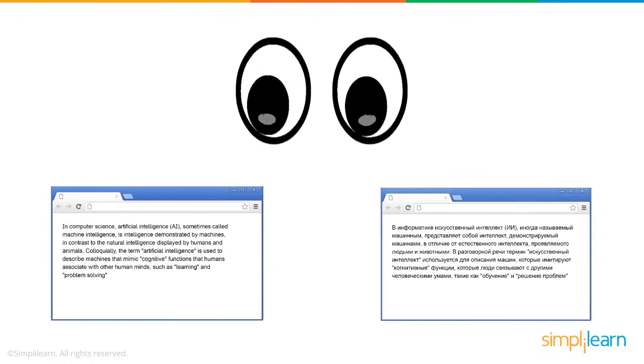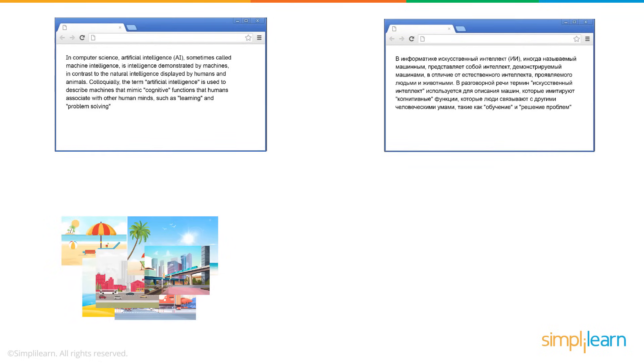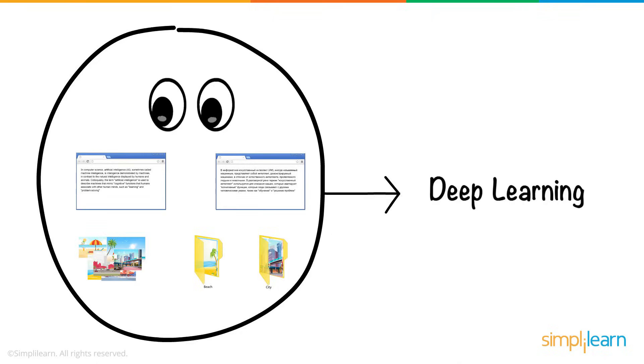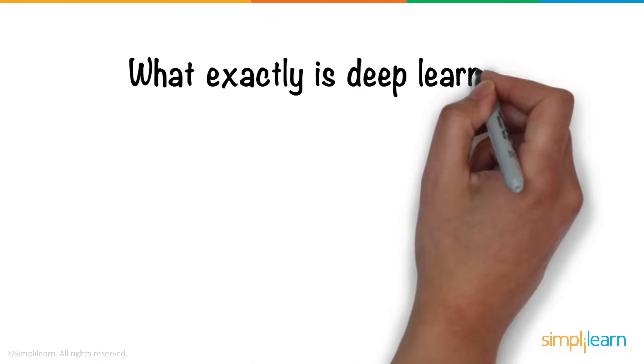Ever wondered how Google translates an entire web page to a different language in a matter of seconds? Or your phone gallery groups images based on their location? All of this is a product of deep learning. But what exactly is deep learning?